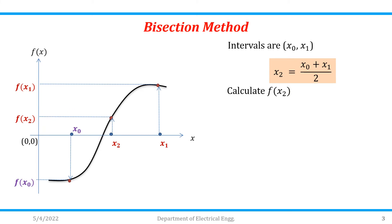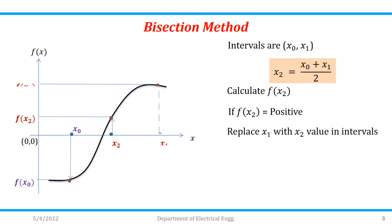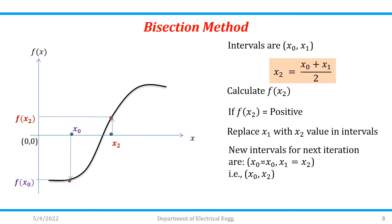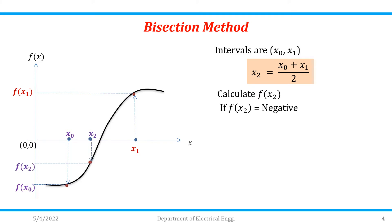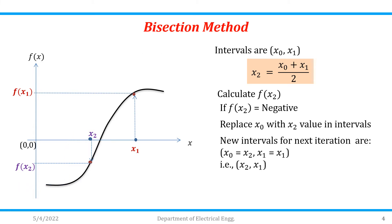If f(x2) is positive, then we have to replace x1 with x2 in the interval. So for the next iteration, instead of writing [x0, x1], we write [x0, x2]. On the other hand, if f(x2) is negative, then replace x0 with x2. So the new interval will be [x2, x1].